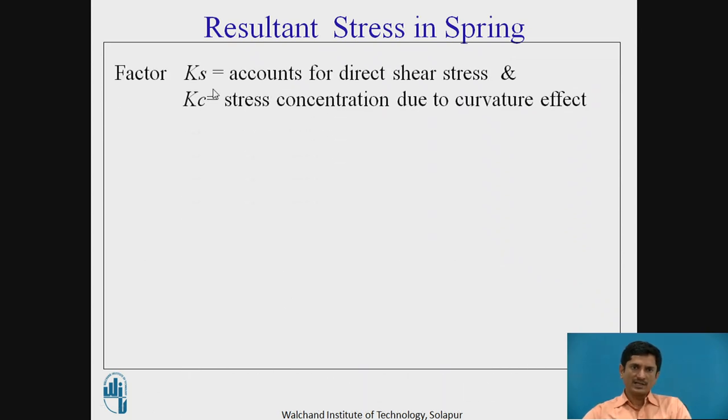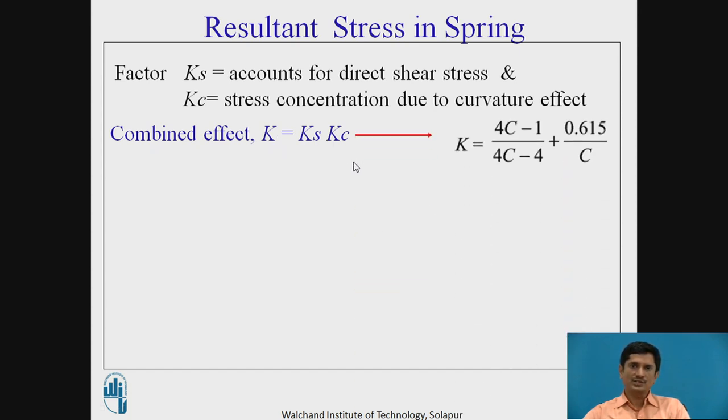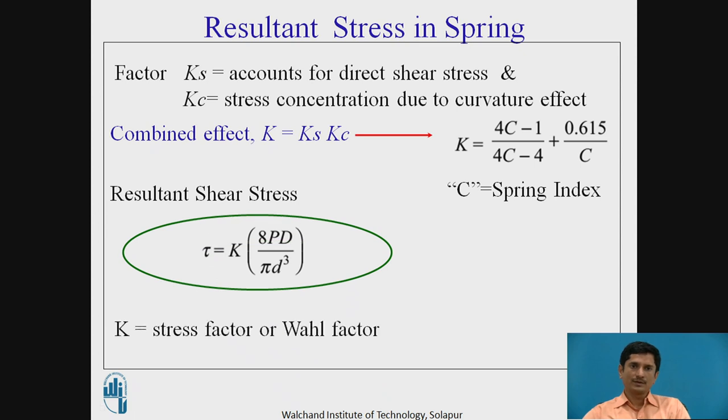Then these two factors, ks and kc. Ks accounts for the direct shear stress and kc is a stress concentration due to curvature effect when we coil a rod into a spring. But these two are acting simultaneously. Let us introduce a factor k, ks into kc. This factor is 4c minus 1 upon 4c minus 4 plus 0.615 by c, where c is the spring index. Hence the resultant shear stress is rewritten as tau equals k into 8PD upon pi d cubed. This k is the stress factor or Wahl factor.